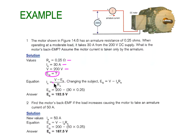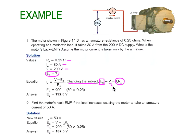Using the formula I_A = (V − E_G) / R_A, we rearrange to make E_G the subject: E_G = V − (I_A × R_A). This is simply Ohm's law giving the voltage drop inside the armature. So E_G = 200 − (30 × 0.25) = 192.5 volts back EMF.